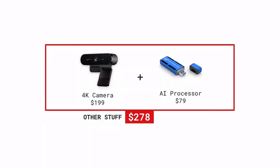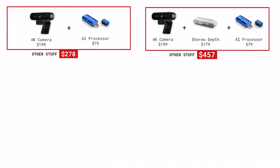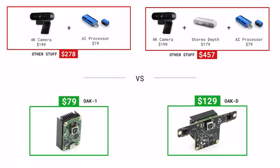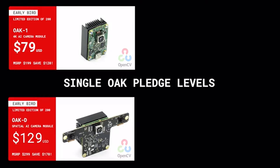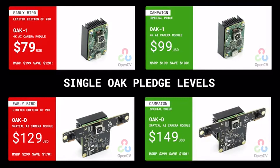Not only that, the OpenCV AI Kit is the most affordable, complete spatial AI system in the world. In fact, many of the individual components would cost more than either OAK One or OAK D during this campaign. OAK One is just $79 and OAK D just $129 for early birds. Regular campaign prices are $99 and $149, which is still a savings of 50% off MSRP.